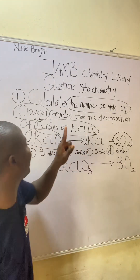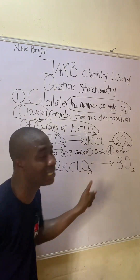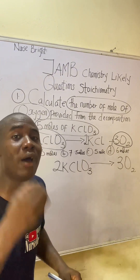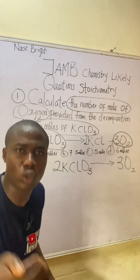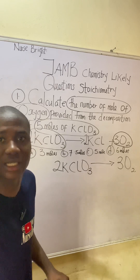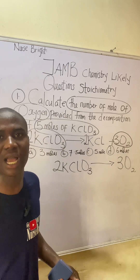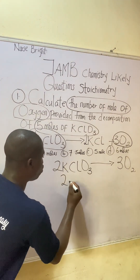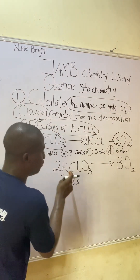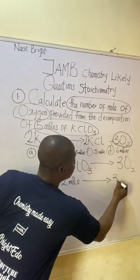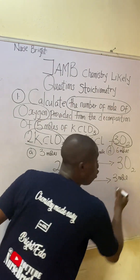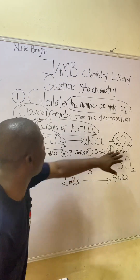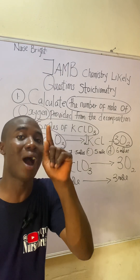Since they asked us to get the number of moles of O₂ and gave us a value for KClO₃, I brought them down. This is how you should solve it. The next thing is to write down the number of moles these substances have according to the reaction. You can see 2 KClO₃, so you write 2 moles; and 3 O₂, so you write 3 moles.